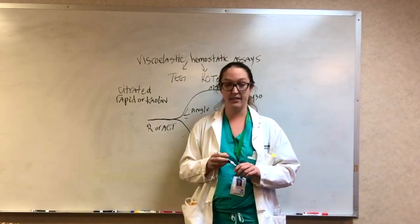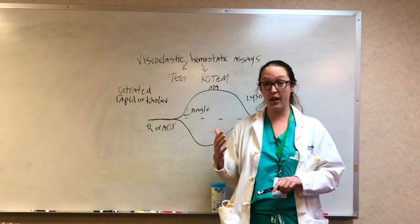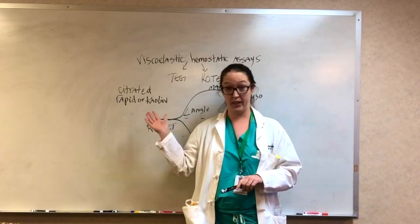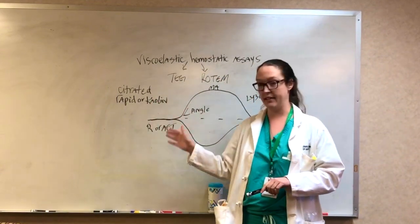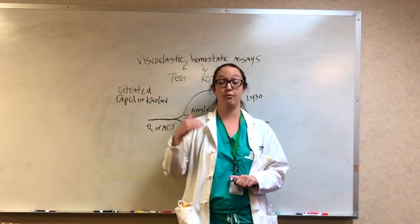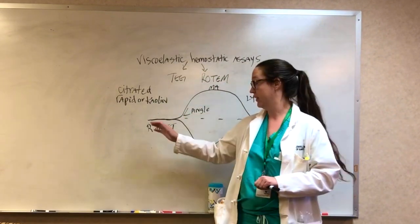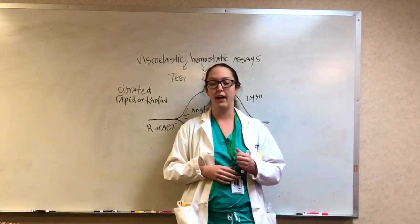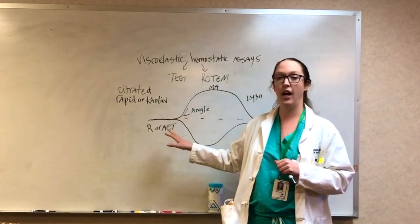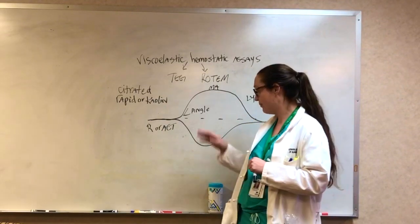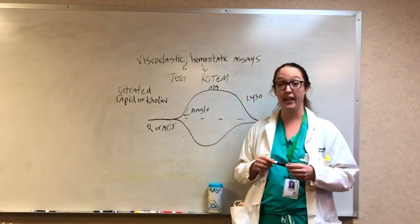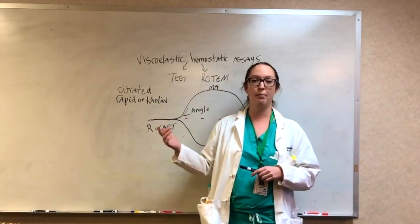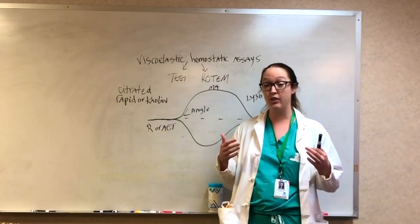So first, R or ACT. R refers to reaction time, that's the output from a citrated Kaolin TEG, or ACT, activated clotting time, which is the output from a citrated Rapid TEG. R times in minutes, ACT is in seconds. Again, ACT from a citrated Rapid TEG is very fast. So that is the time to clot formation. The second measurement that you care about is angle, which is the rate of clot propagation. This is an effect of fibrinogen and fibrin.